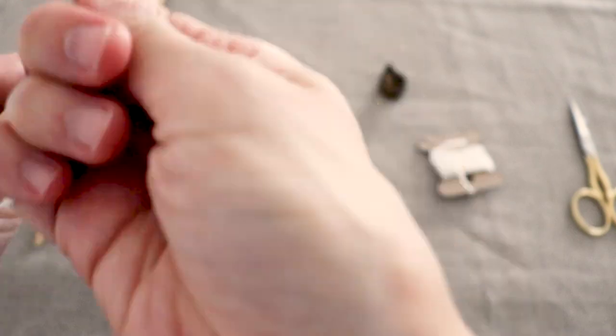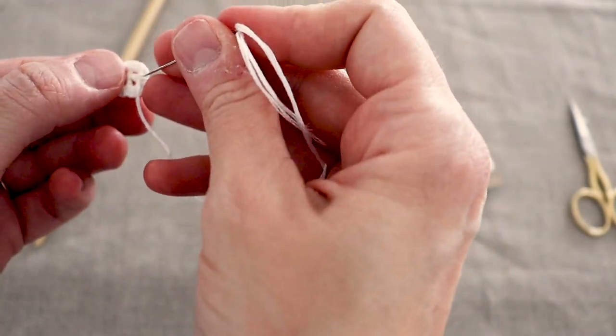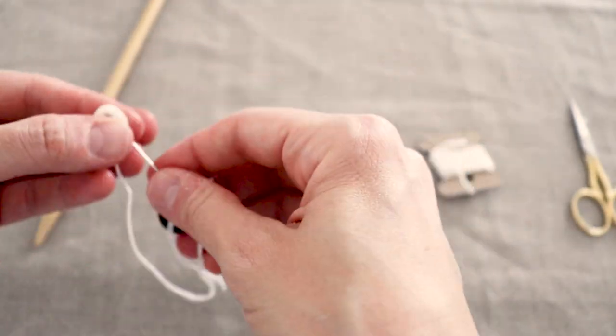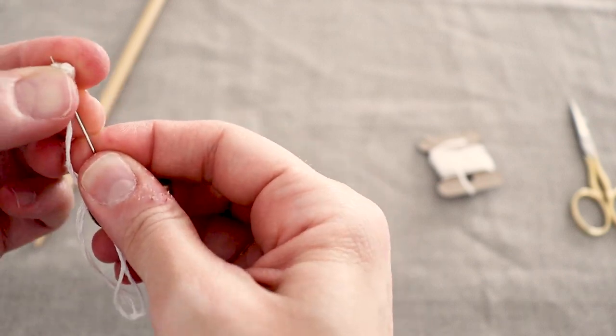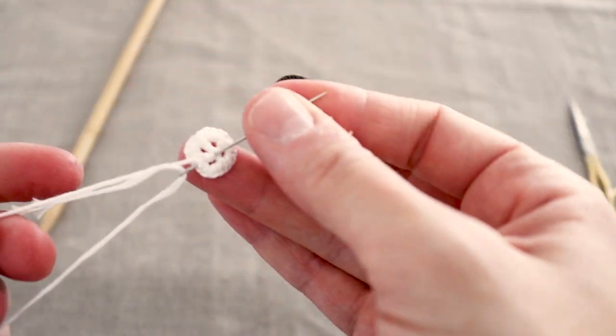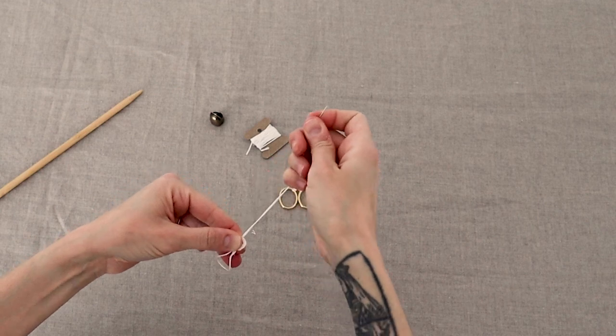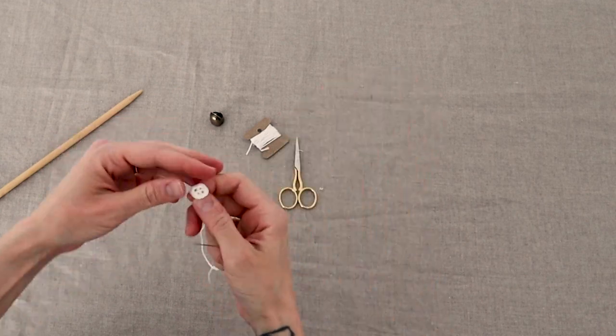When you get to the end, make a small knot. I make sure all the knots in this are to the back of the button. And trace the needle and thread along the cross to the center. Knot again, and you can use the extra thread to sew the button to the shirt.